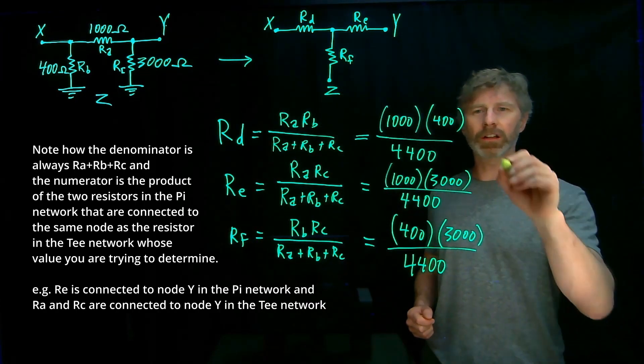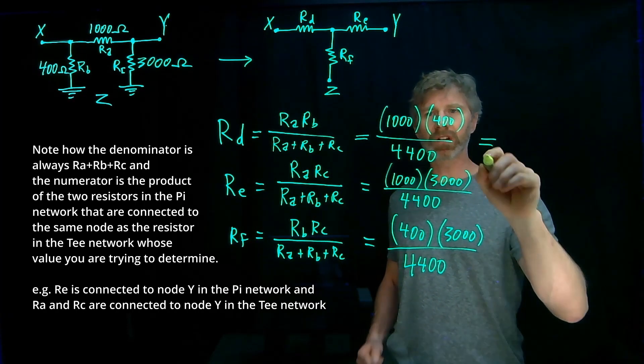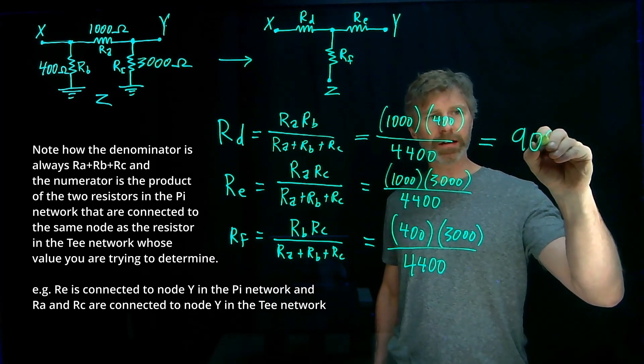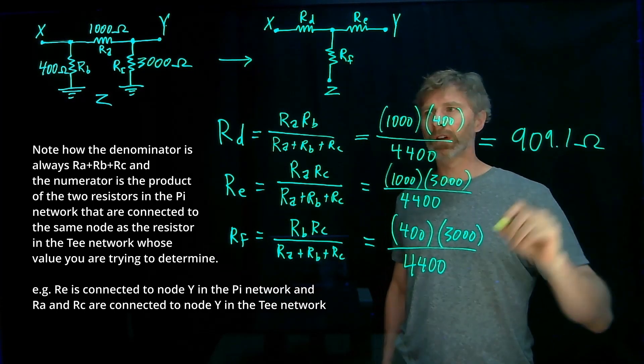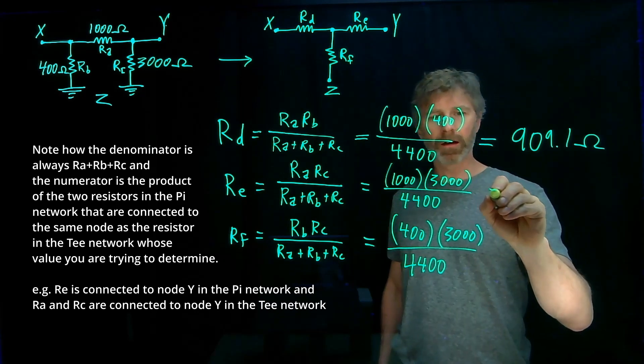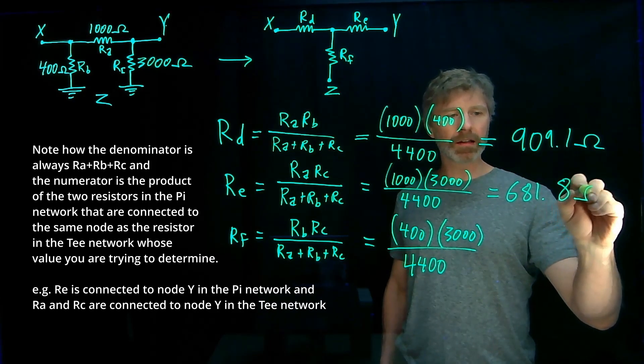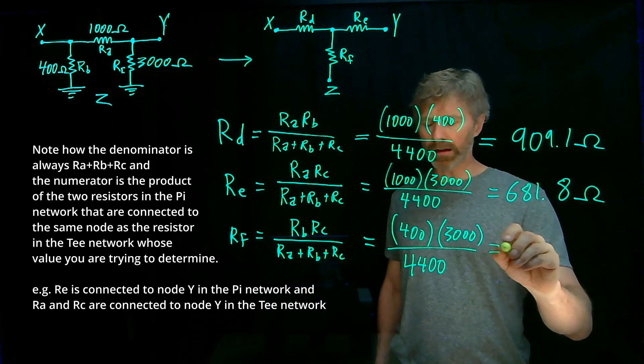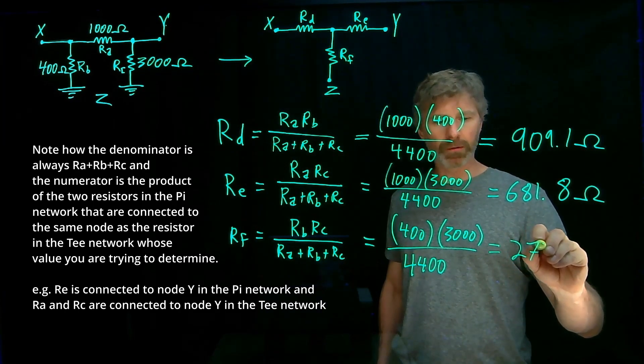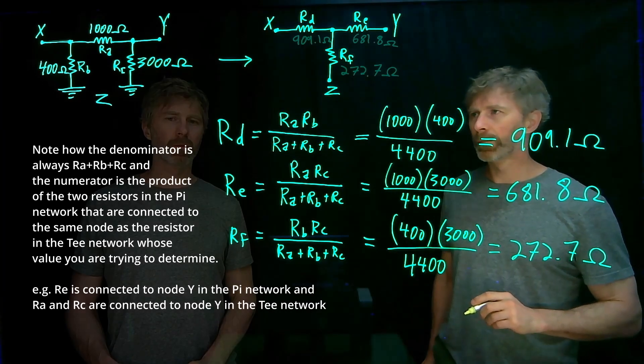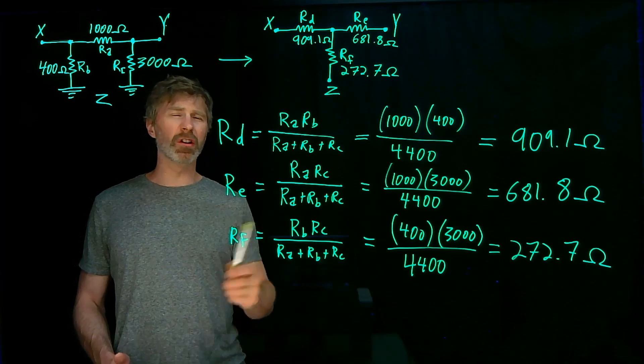So then doing these calculations, plugging in the numbers to a calculator, I get 909.1 ohms for Rd, I get 681.8 ohms for Re, and I get 272.7 ohms for Rf.